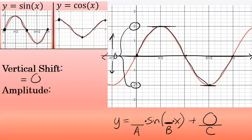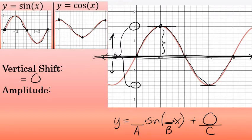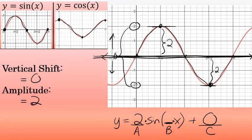The next step is to identify the amplitude. Once you have the vertical center — in this case the x-axis — amplitude is the number of units from the center to the graph's highest point, which equals the units from center to the lowest point. In this case, those are both 2 units. So the amplitude is 2, which is the value of a. This equation will be y equals 2 times the sine.